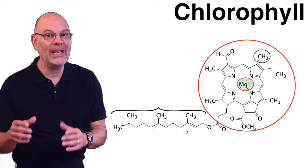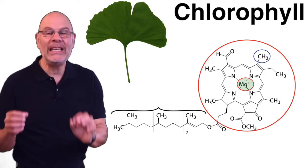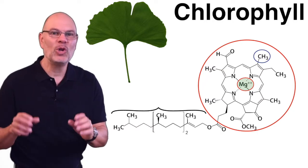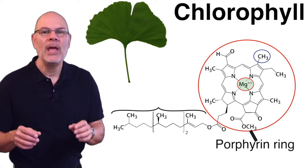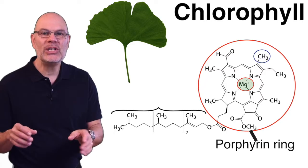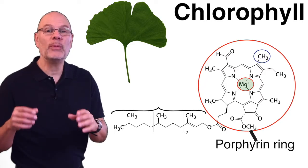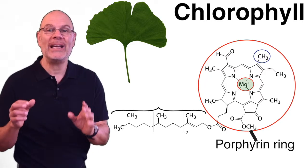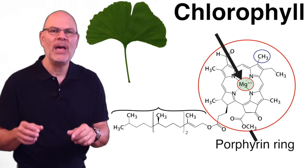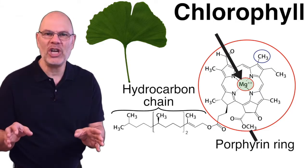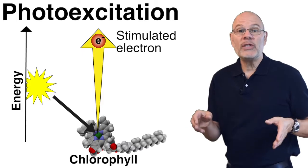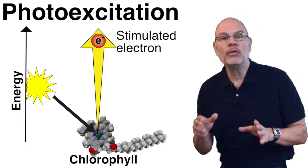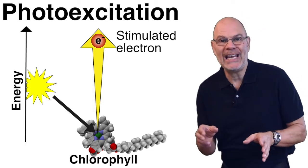That's why chlorophyll is green and that's why leaves are usually green. Like phospholipids, chlorophyll has a head and a tail. The head consists of a nitrogen-rich structure called a porphyrin ring. In the center of that ring is a magnesium atom. The tail is a hydrocarbon chain. Because of this structure, chlorophyll can be stimulated by light — this is called photoexcitation.